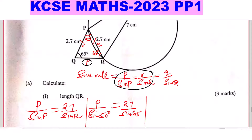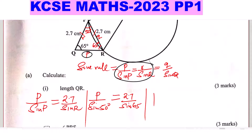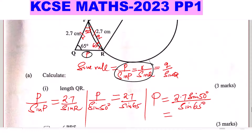Making P the subject, P is given by 2.7 times sine of 50 degrees divided by sine of 65 degrees. This gives 2.28 centimeters. So that is QR — remember, P was QR.